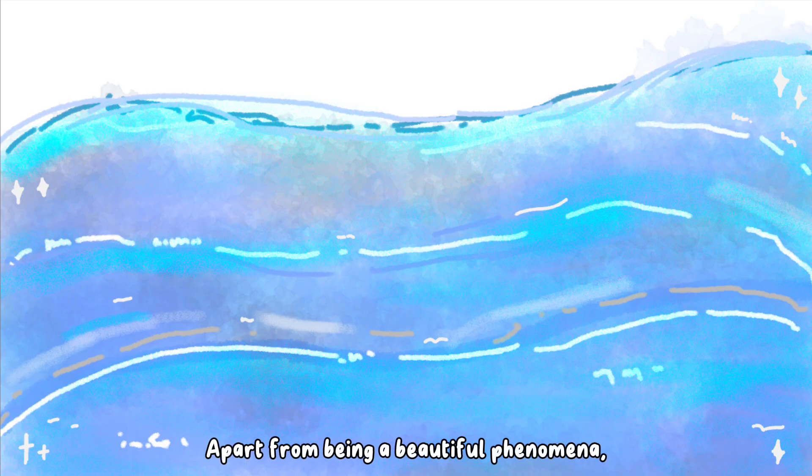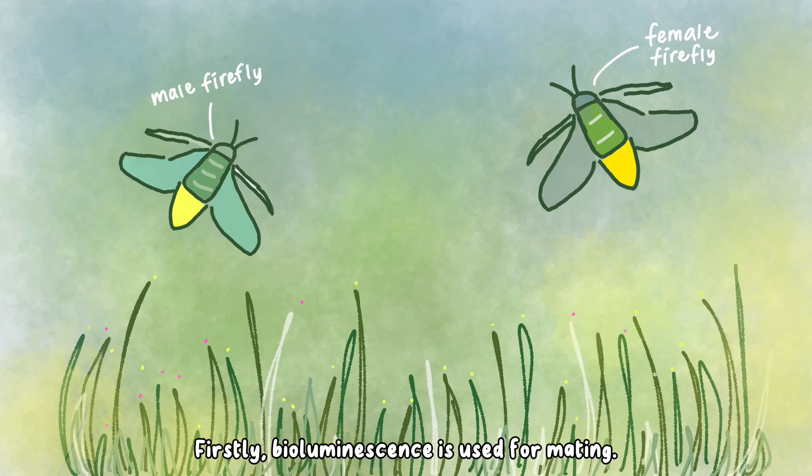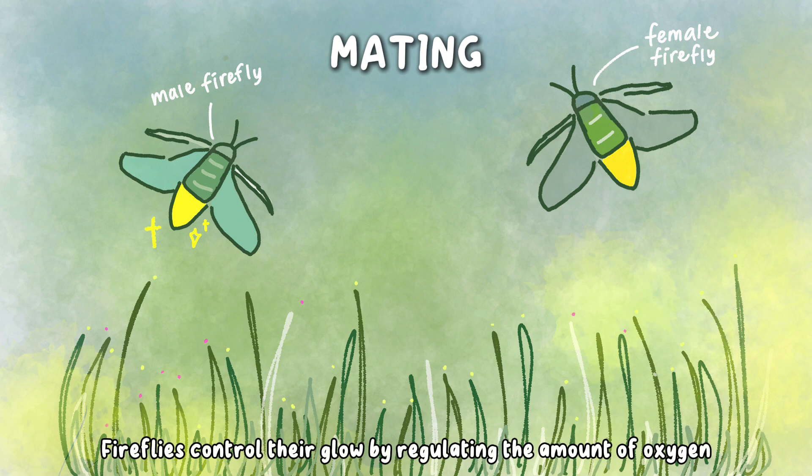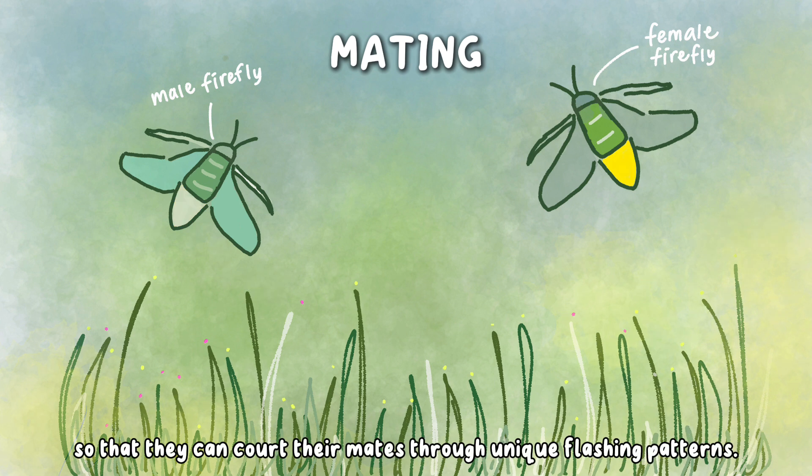Apart from being a beautiful phenomenon, bioluminescence is crucial for the organism. Firstly, bioluminescence is used for mating. Fireflies control their glow by regulating the amount of oxygen that goes into their light-emitting organ, so that they can court their mates through unique flashing patterns.